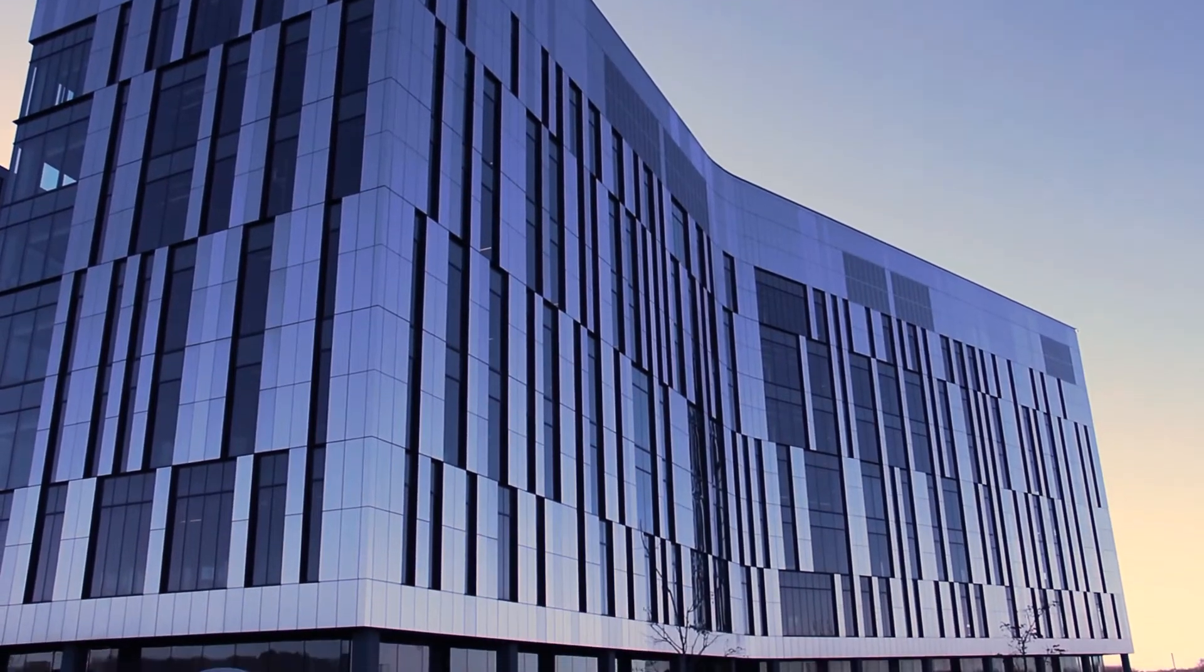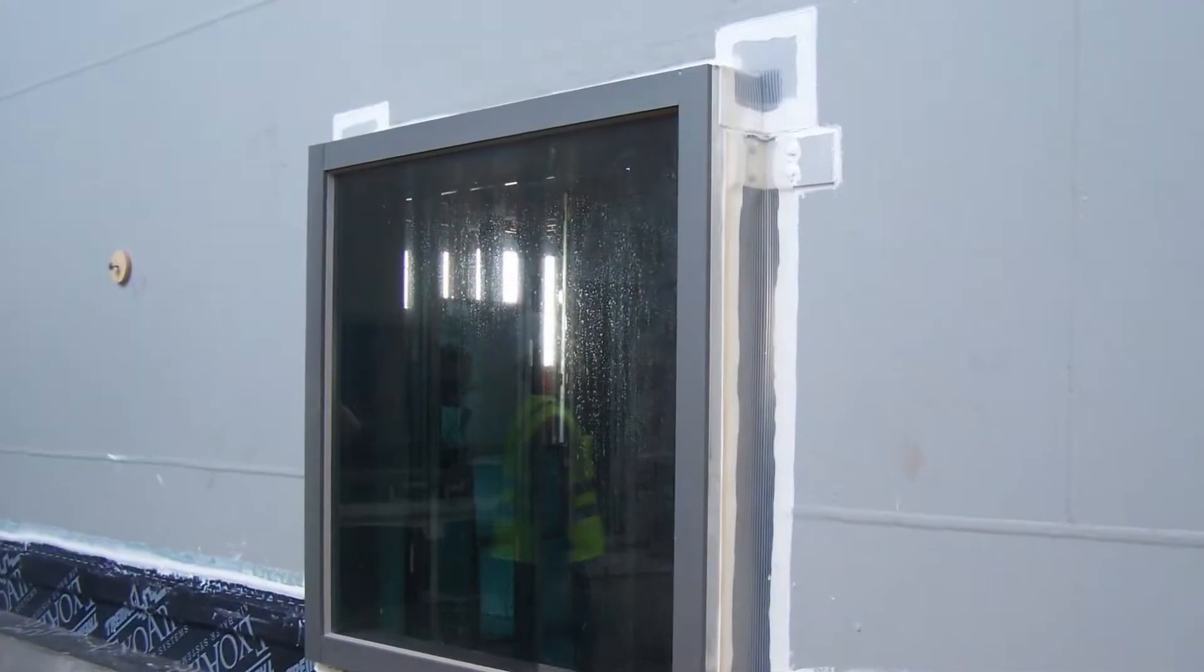Most buildings now, there's not just one type of facade on the building. There's lots of different projections, lots of different angles, and so we come up with the different 3D molded corners that may be necessary to make those transitions.